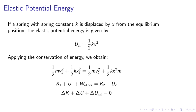For example, if we consider a spring elastic potential energy, we can consider a spring with spring constant K, displaced by X from the equilibrium position. And the potential energy is given by U equals half Kx squared. Applying the conservation of energy, kinetic plus potential at point 1 equals kinetic plus potential at point 2. We're applying K1 plus U1 plus W other equals K2 plus U2.